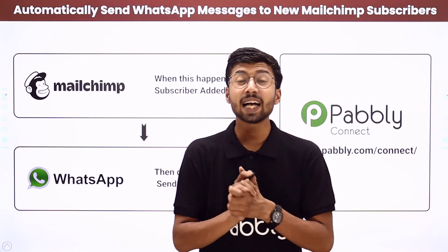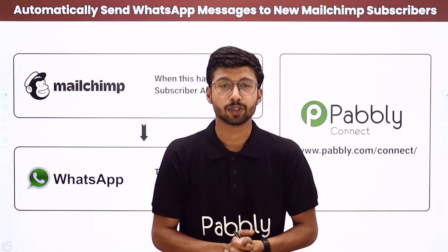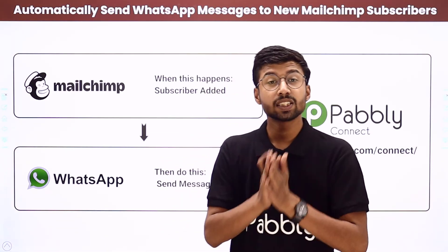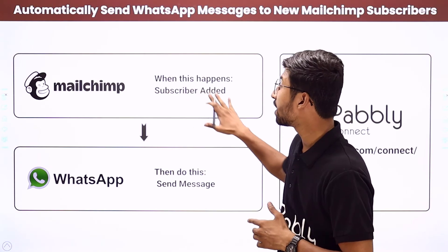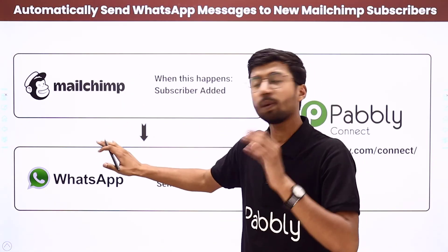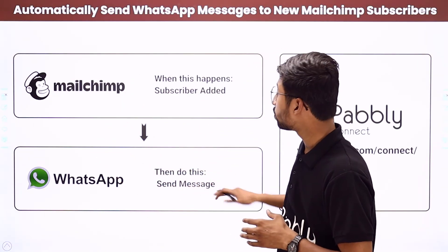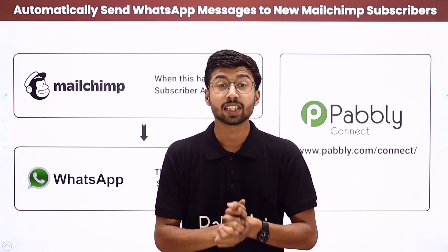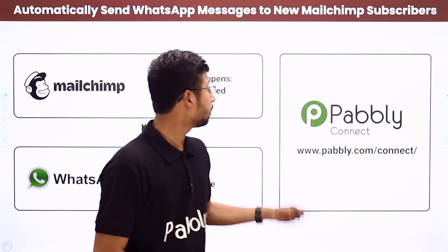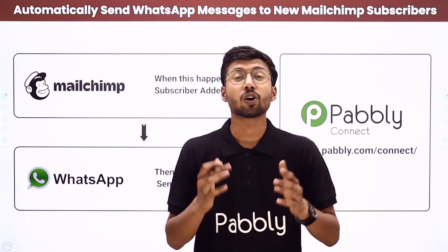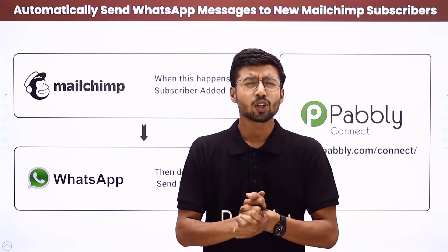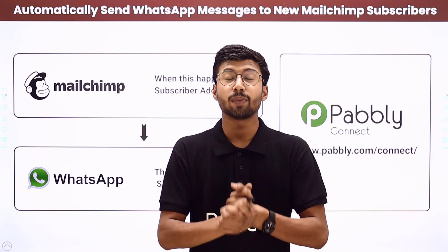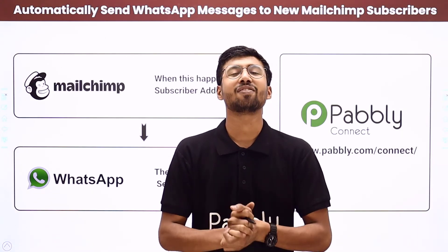To solve this problem I came up with a second method: setting up an automation. By this automation, whenever a new subscriber is added to our Mailchimp contact list, a WhatsApp message will automatically be sent to their number. To make this happen, we will be using Pabbly Connect, which is an automation and integration software. Let me show you the step-by-step guide to create this automation.